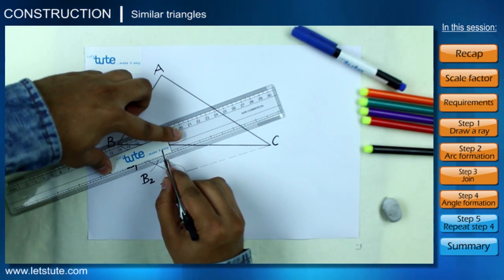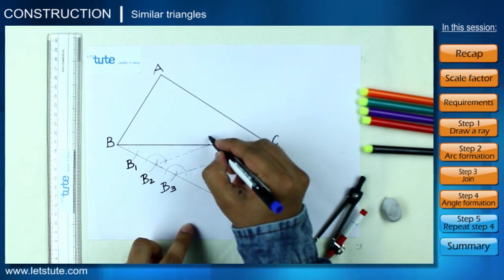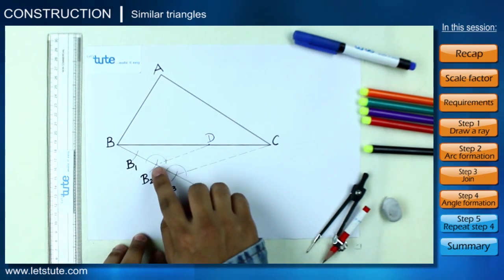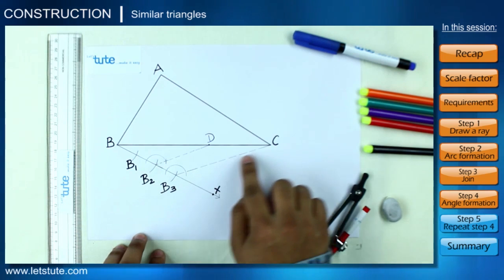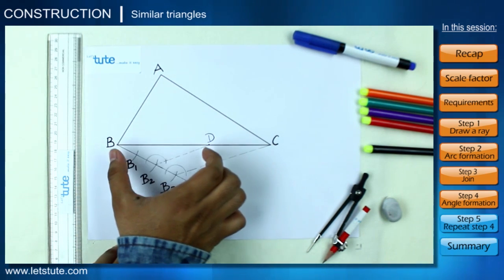Now with the help of a straight edge, if we join B2 with this arc intersection and then further extend it to touch the side BC, say at point D, then not only will this line segment B2D be parallel to B3C, but also the side BC now has been divided in a ratio of 2 is to 1.